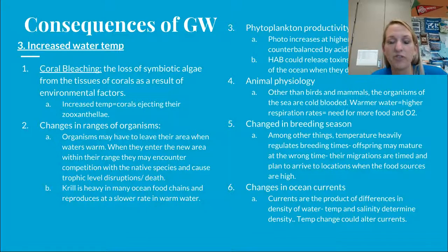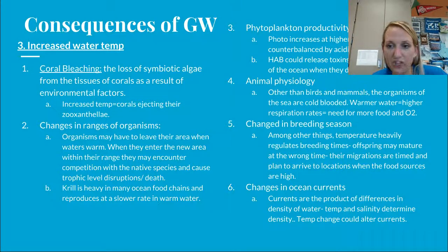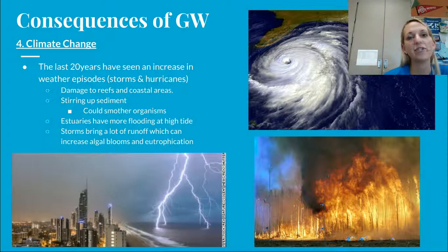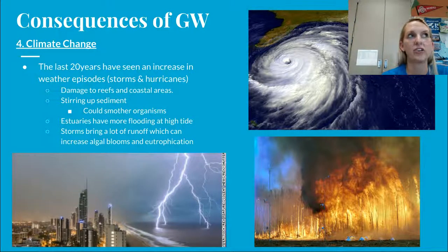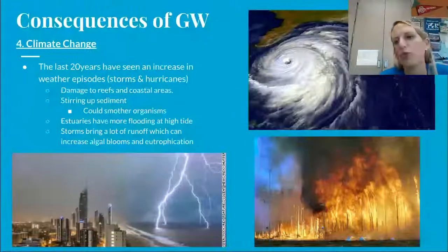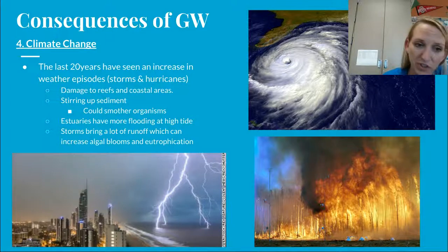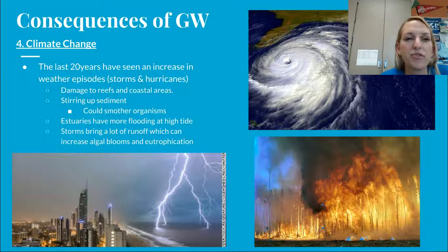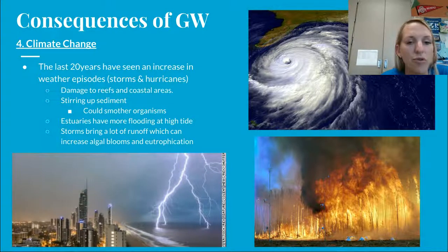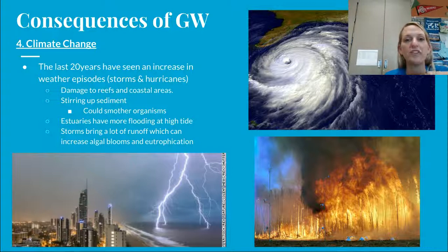Changes in ocean currents: currents are a product of differences in water density, which is controlled by temperature and the amount of particles. Temperature and salinity determine density, so if temperature is changing, oceanic currents could be altered. The last consequence of global warming is climate change: the last 20 years have seen an increase in really strong weather episodes — strongest hurricanes, strongest tornado seasons, strong wildfires from droughts, and strong flooding. These strong weather episodes could damage reefs and coastal areas, stir up sediment that decreases photosynthesis and smothers organisms' gills or coral polyps. Estuaries will have more flooding at high tide, and storms could bring nutrients that cause algal blooms and eutrophication.